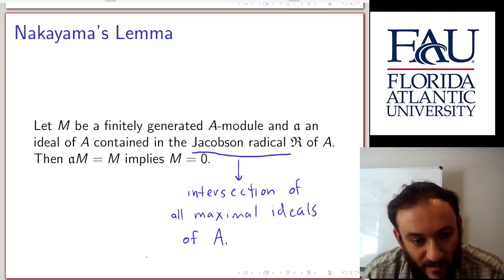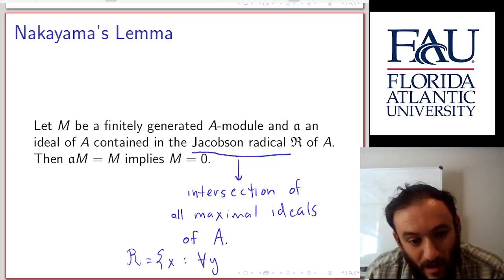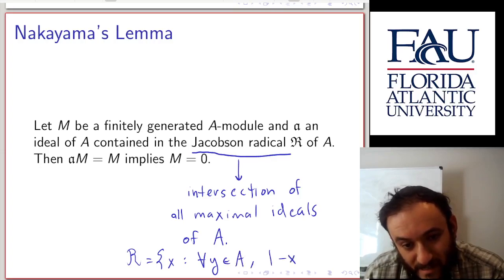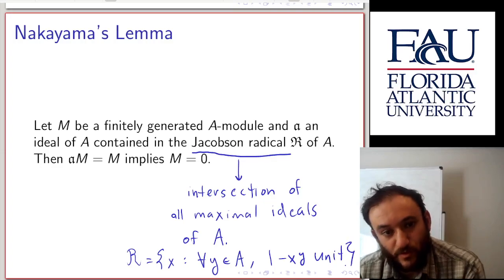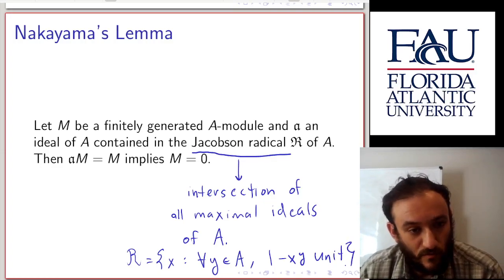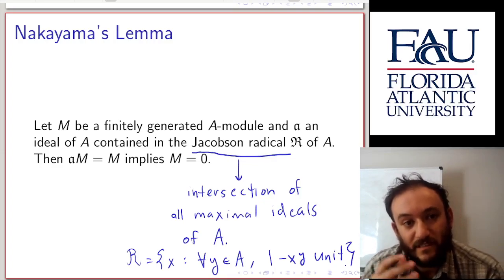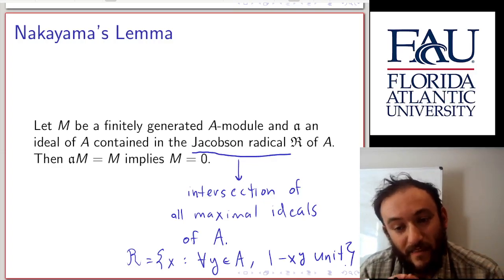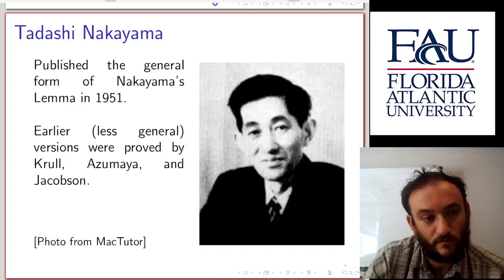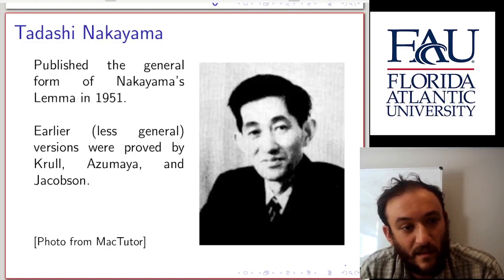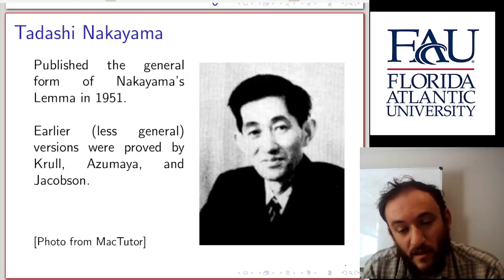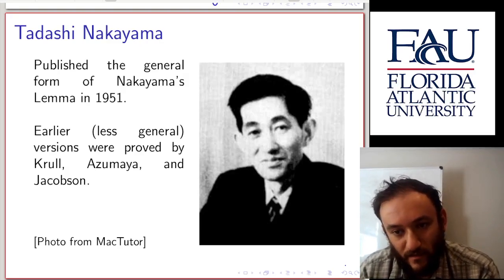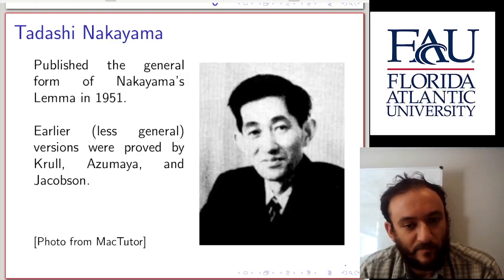The Jacobson radical also has the property that it is the set of elements x such that for any y in A, 1 - x·y is a unit. These are two equivalent characterizations. So if an ideal contained in the Jacobson radical doesn't affect M — meaning M stays the same after multiplying by that ideal — that must mean M is the zero module. Nakayama published the general form of this lemma in 1951, though there were earlier versions. Sometimes it's referred to as the Krull-Azumaya theorem or the Azumaya-Jacobson theorem, but most people call it Nakayama's Lemma.